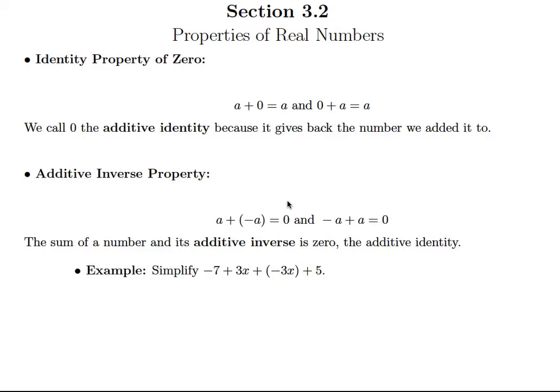Here we're going to look at the identity property of zero and the additive inverse property. First of all, the identity property of zero simply says that if you're taking a number—and I'm just using the letter a to represent any number—and you add zero to it, you just get that original number back again.